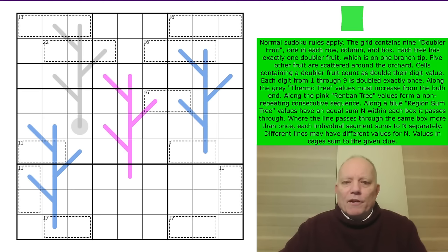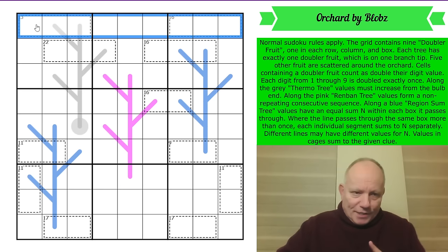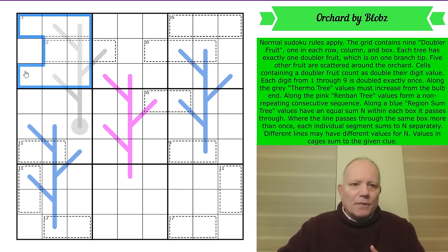Rock Rat Zero has set very hard puzzles before, so has Blobs. Very reliable constructor though, always good fun, and I will go through the rules now. Normal Sudoku rules apply at least. The digits one to nine will be placed in every row, every column, and every three by three box. I say digits very carefully because there are nine doubler fruit in the puzzle, one in each row, column, and box.